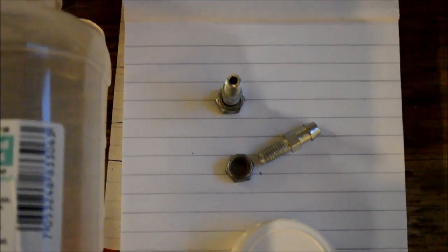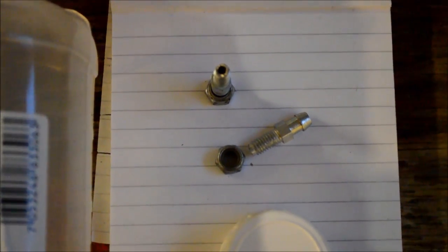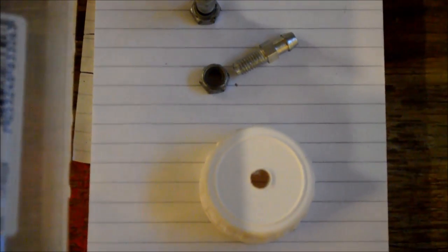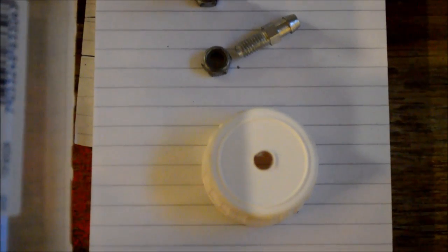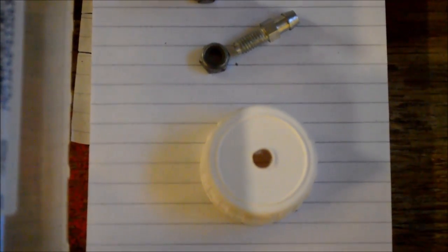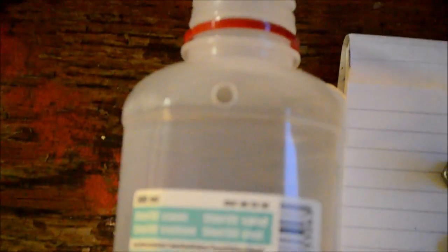As you can see I have cut off the end of the bleeding nipples. I have also drilled a hole in the cork on the bottle and one hole on the side.